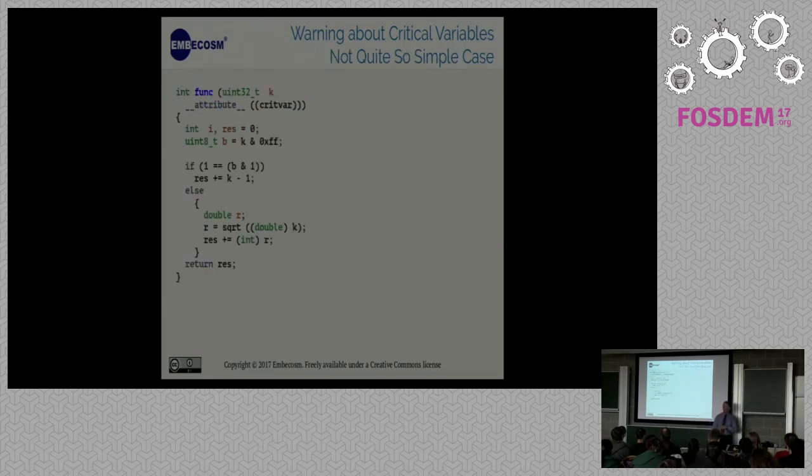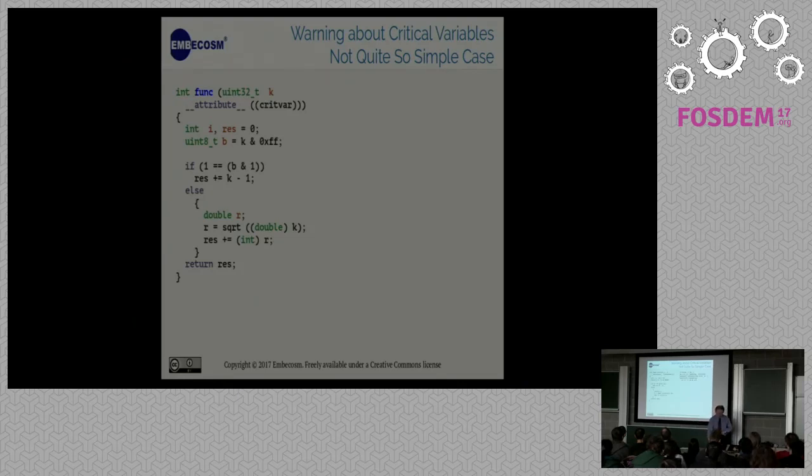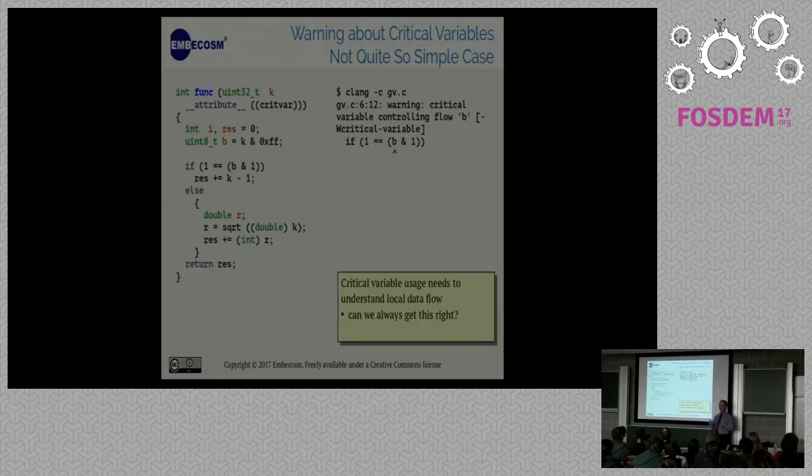Here's my function of concern. One option is this, which is to say my argument k has an attribute which I've called crit var. Remember we're now in the territory of stuff we want to do, not that we have done, so this is where feedback is welcome. Well now hopefully I'll be able to get a warning that says hold on, you've got a critical variable controlling a flow because I can see it's part of the expression controlling this if statement. So that seems to be okay, and even if I put my critical variable in a header, I've still got all the information I can still make that work.